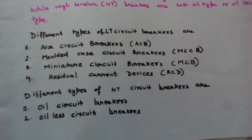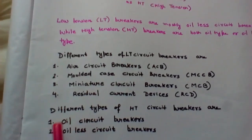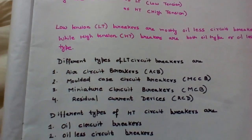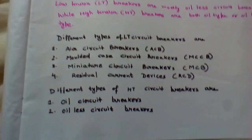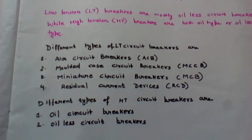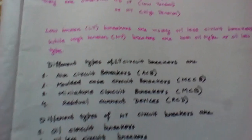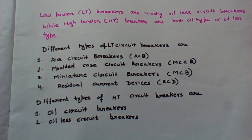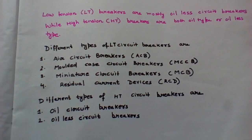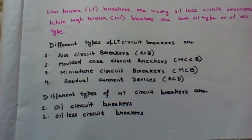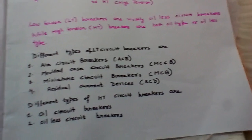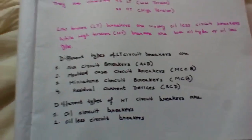The different types of HT circuit breakers are: oil circuit breaker, which uses oil, and oil-less circuit breaker. So these are the classifications or different kinds of circuit breakers.